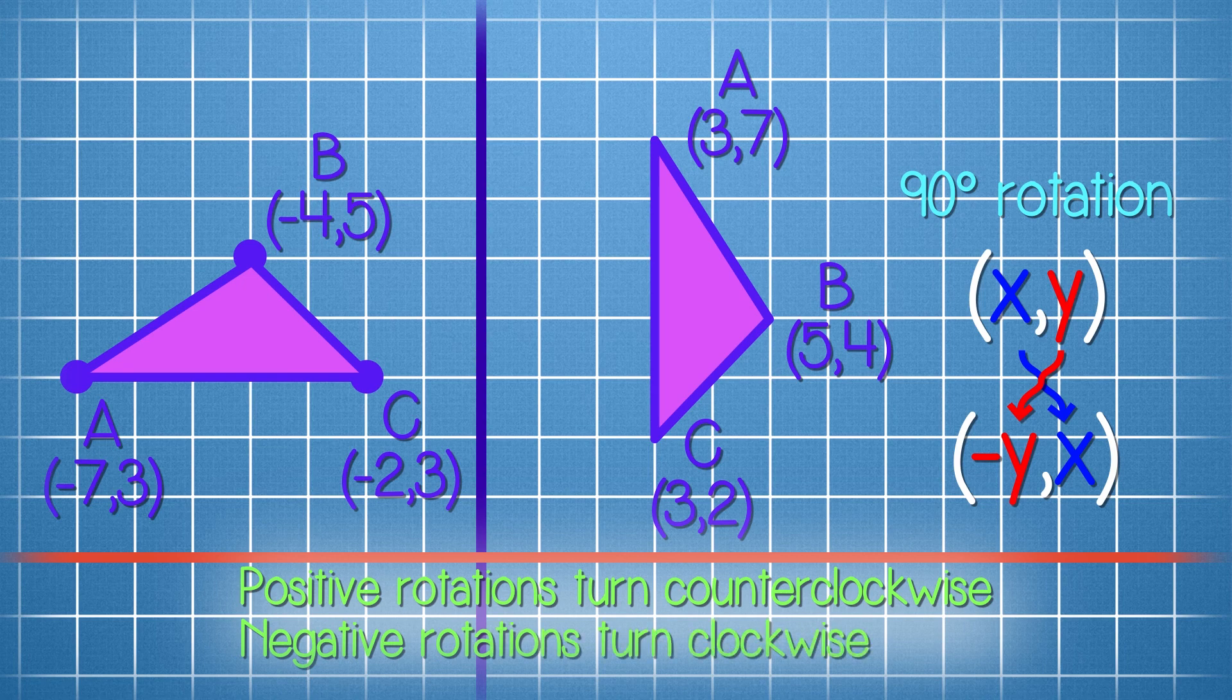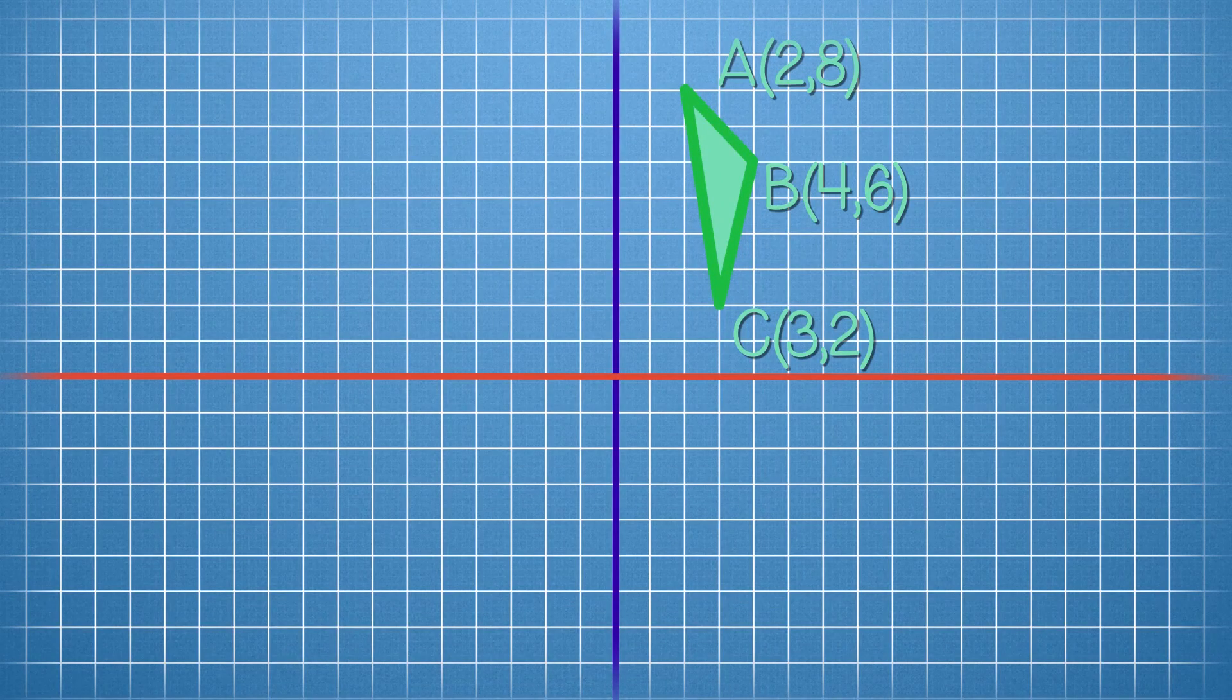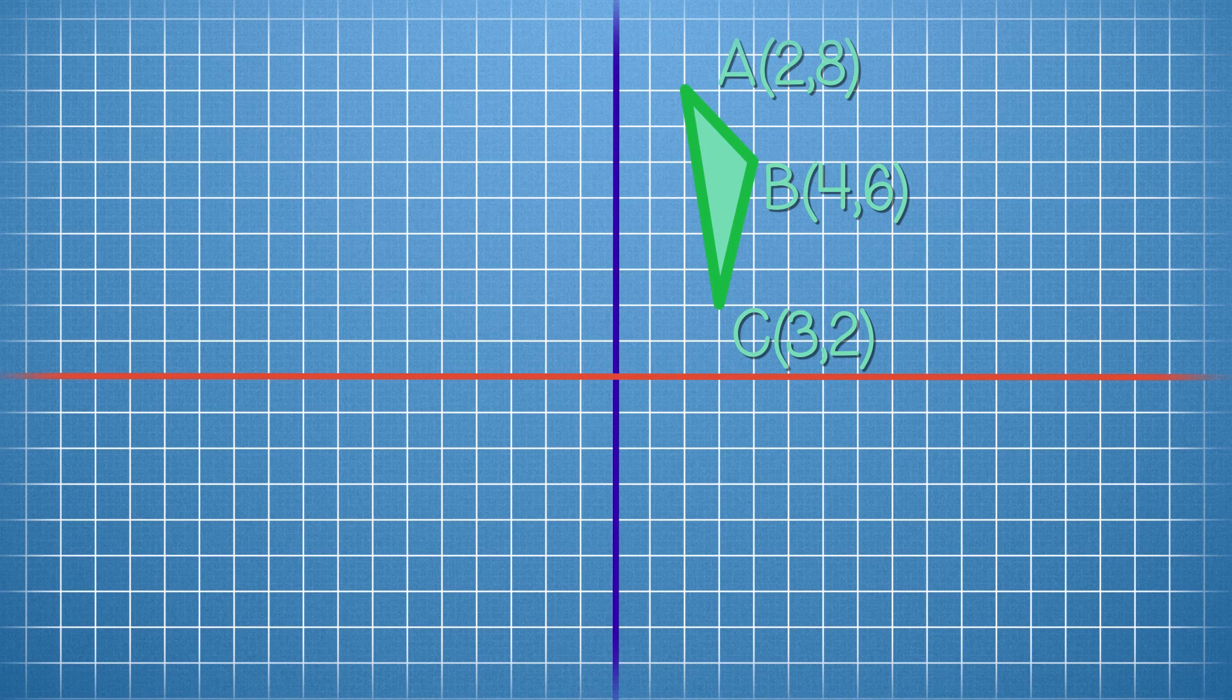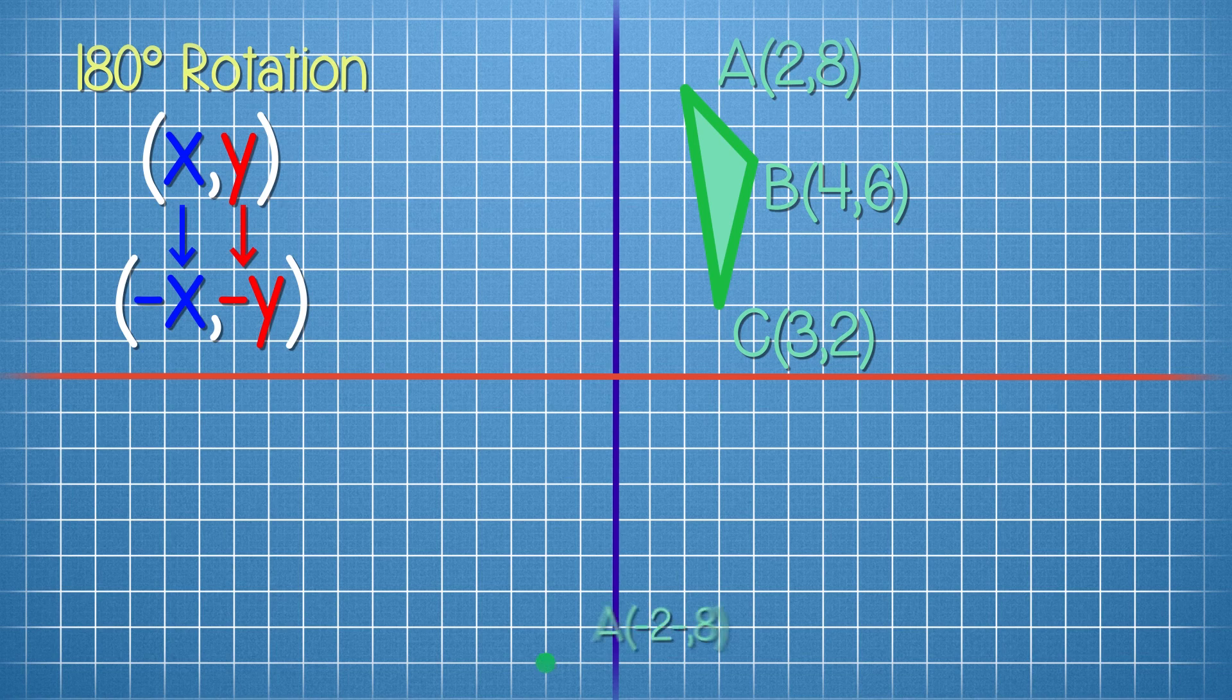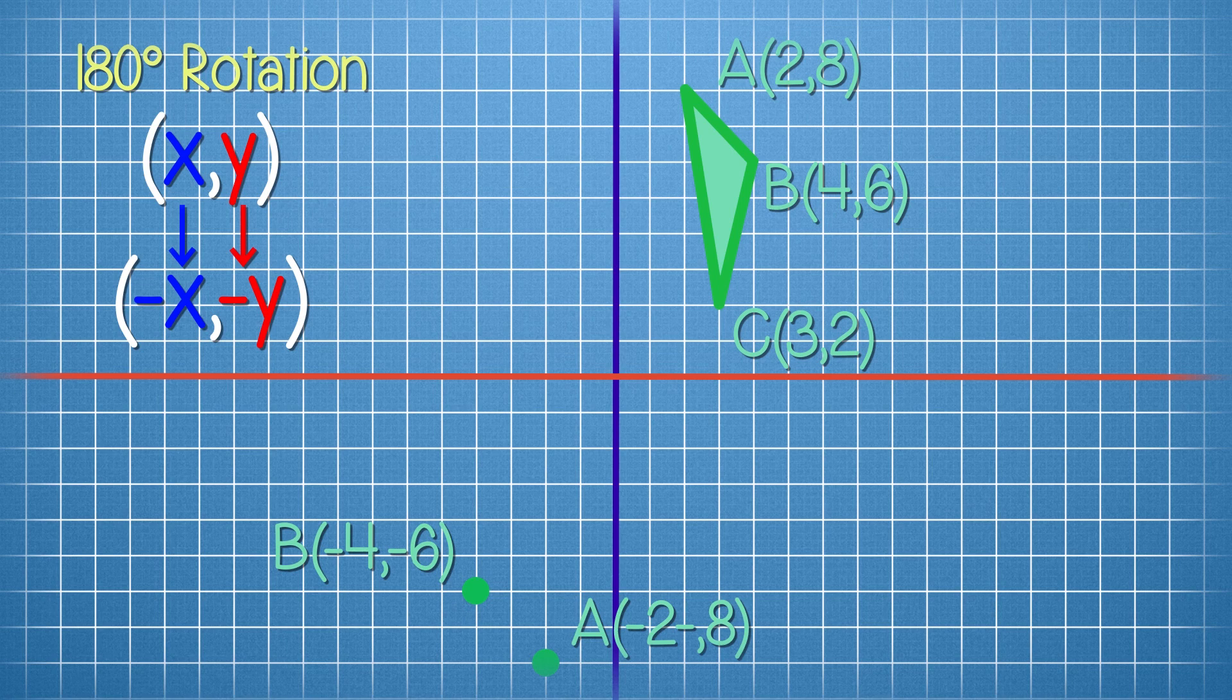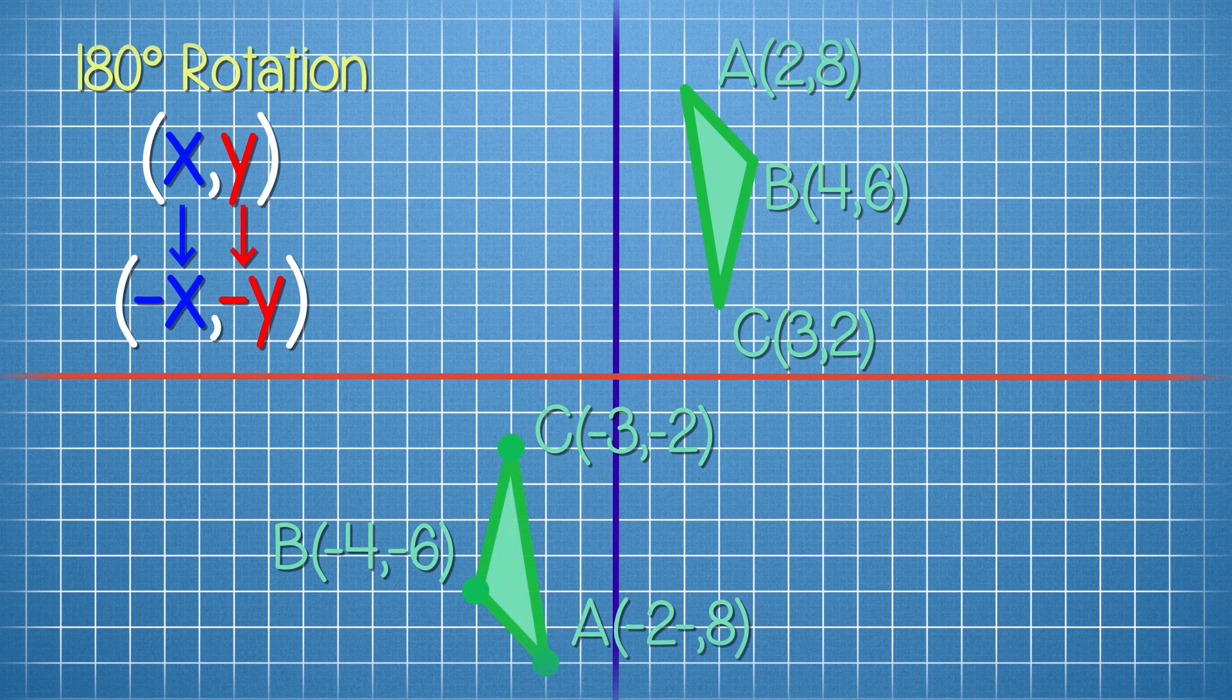Let's try another. Here we have a new triangle ABC. Let's rotate it 180 degrees about the origin. Remember the rule? When rotating 180 degrees, the x and y coordinates both change signs. So vertex A becomes (-2,-3). Vertex B becomes (-1,-6). Again, we're rotating in a counterclockwise direction as the degree sign is positive.